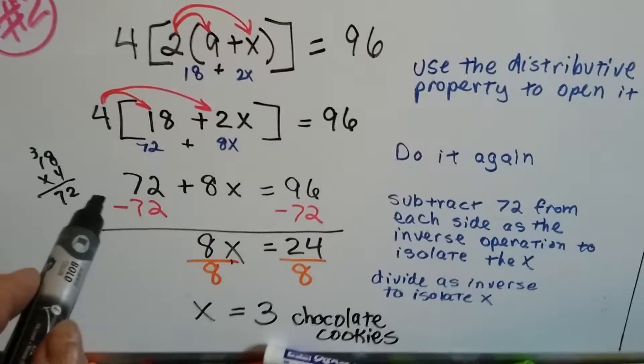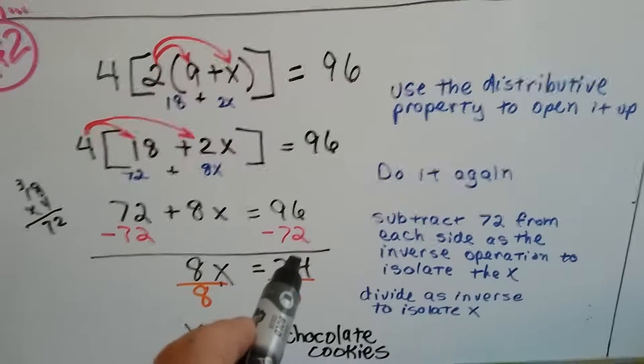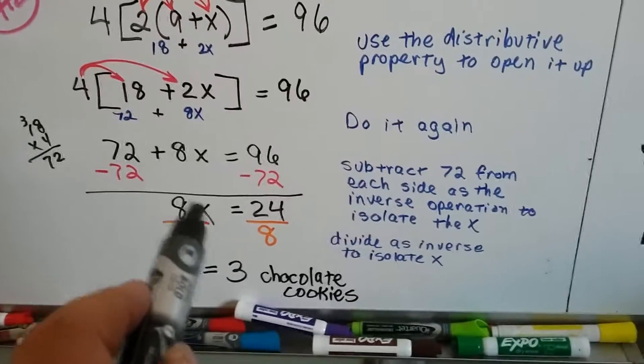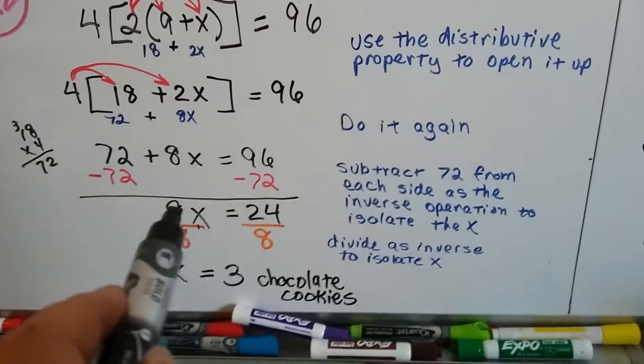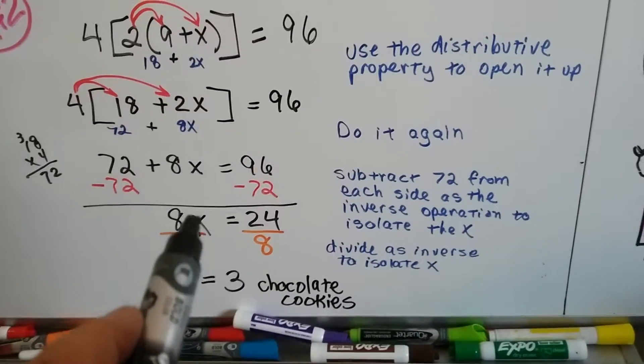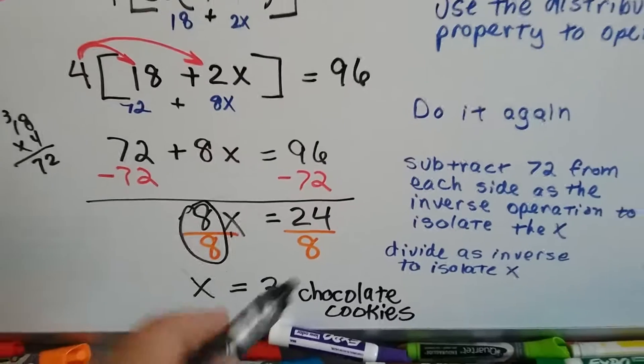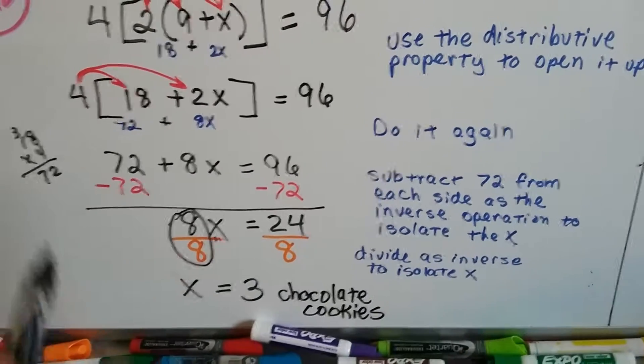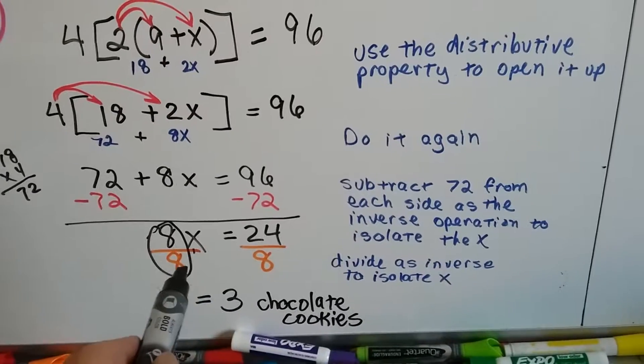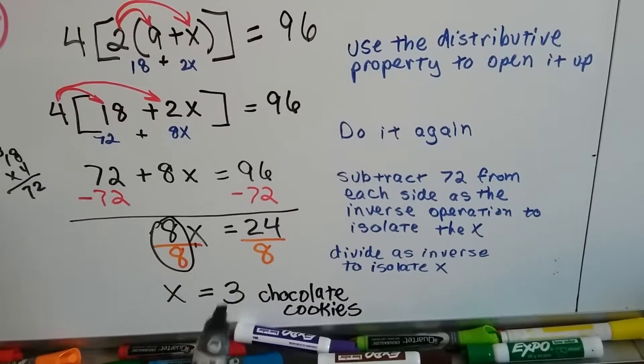Now we can subtract 72 from each side and get 8X equals 24. And now because 8X means 8 times some number that the variable is standing for, that's multiplication, we use division on each side to isolate this X. The 8 over 8 becomes a 1 and it drops off. We don't need to put a 1 in front of it. And now we have X equals 3 because 24 divided by 8 is 3.